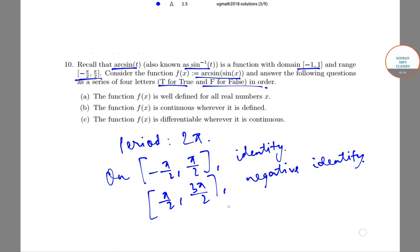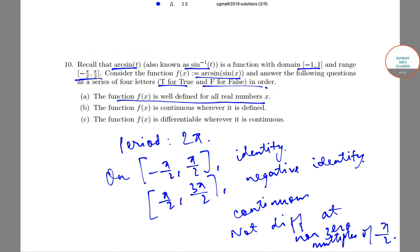the function is well-defined and continuous everywhere. However, it is not differentiable at nonzero multiples of π/2. Therefore, option (a) - the function f(x) is well-defined for all real numbers x - is true.